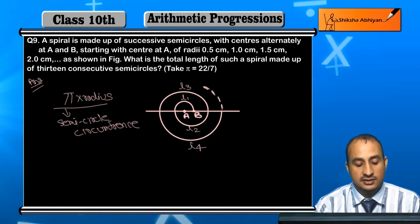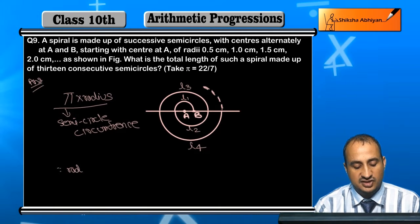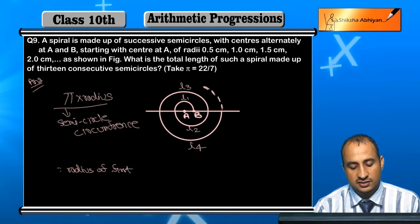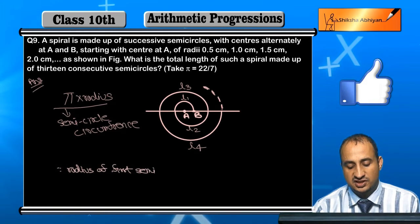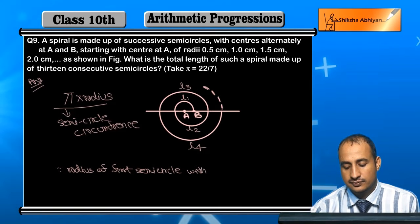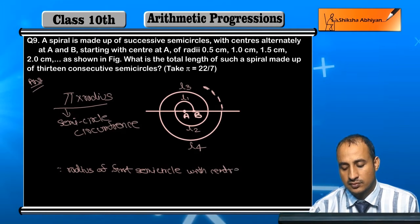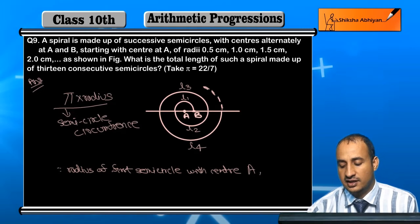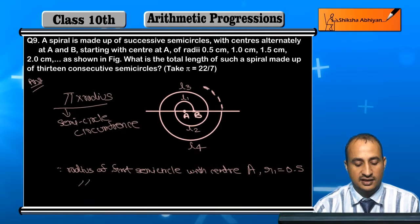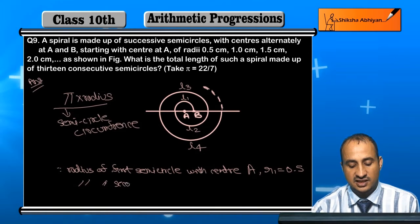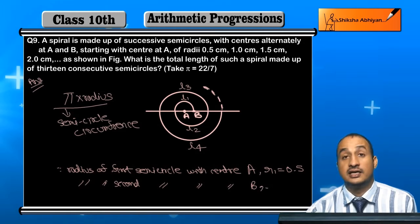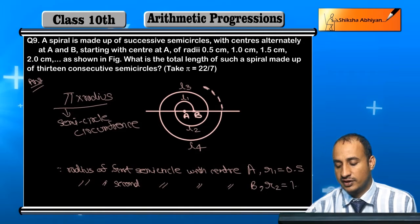Now, since the radius of the first semicircle with center A, with center A, how much is it? I will take R1 equals 0.5. And then, the radius of the second semicircle with center B, how much is it? R2, which is 1.0.